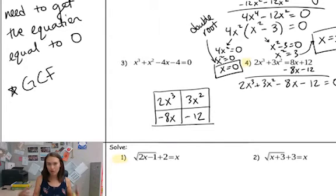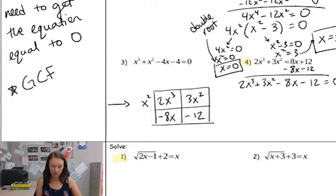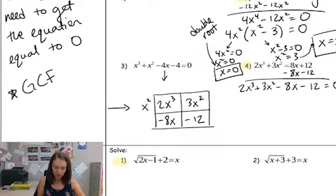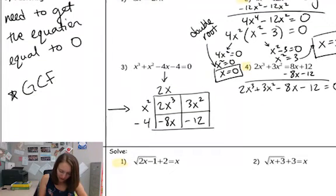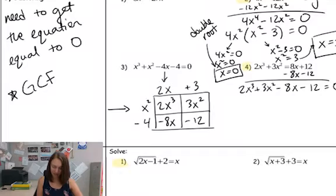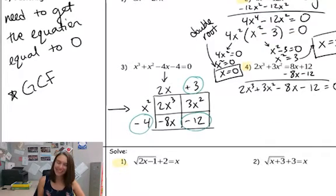Our goal is to figure out what goes on the outside of the box so that it all multiplies into the inside correctly. I know based on this row — if you look across the top row, they both have an x² term, so I need an x² term there. In order to get that first box as 2x³, I'm going to need to multiply my x² by a 2x. Then 2x times negative 4 will get me negative 8x, and x² times positive 3 will get me 3x². Double-check that 3 times negative 4 gives you negative 12. And it did!